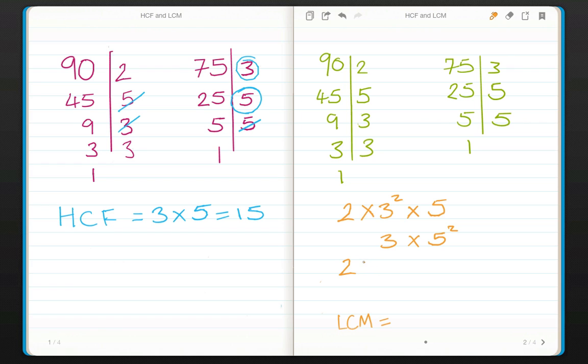So 2 is the biggest one in that first column. I'm going to multiply that by 3 squared, because that's the biggest in the second column. And I'm going to multiply that by 5 squared, because that's the biggest in the third column. If I multiply these three together, I should get an answer of 450. And that is the lowest common multiple.